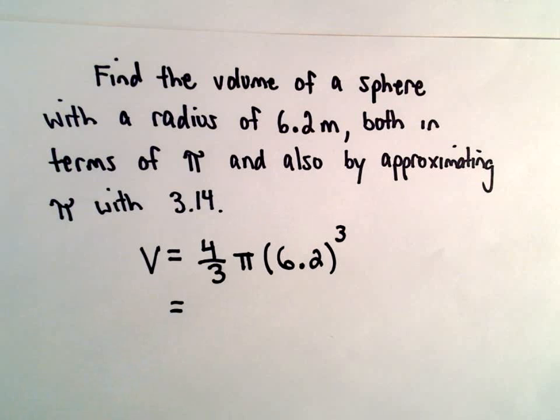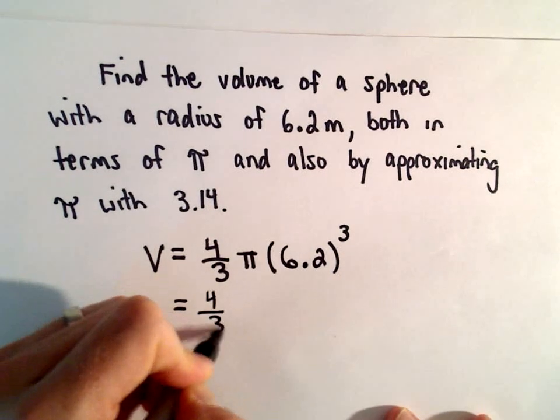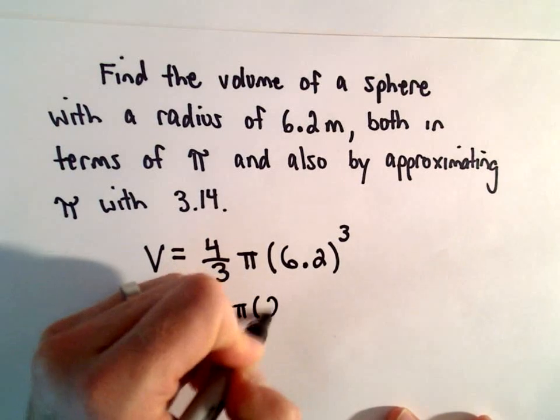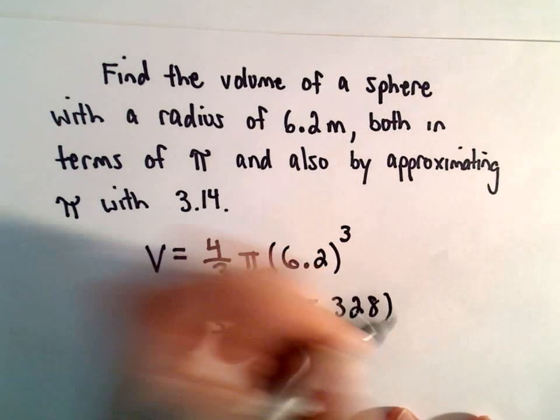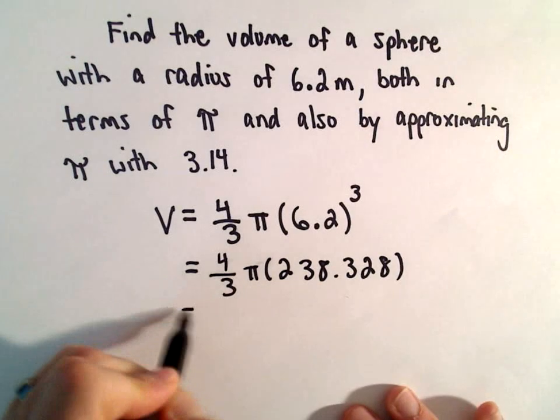So 6.2 cubed, I'm getting that to be 238.328 and I think I'm going to start rounding this to the nearest hundredth.